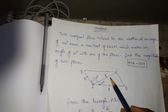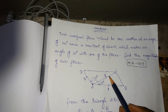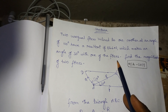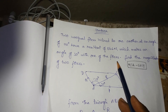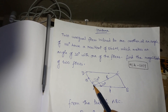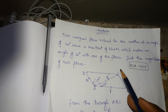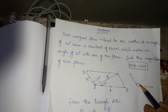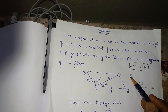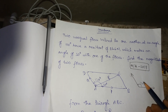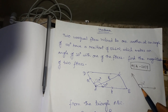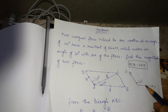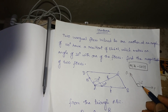Then, the resultant is 86.6 newtons, and it makes 30 degrees with one of the forces. The resultant R makes 30 degrees with P. So the angle between P and Q is 120 degrees, and the resultant is at 30 degrees.